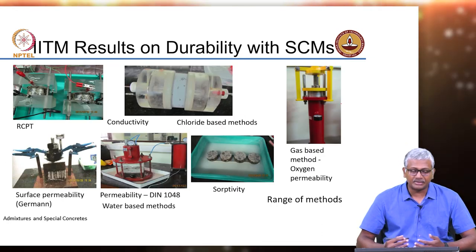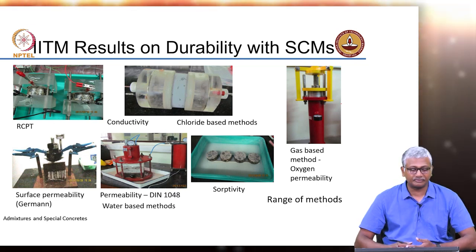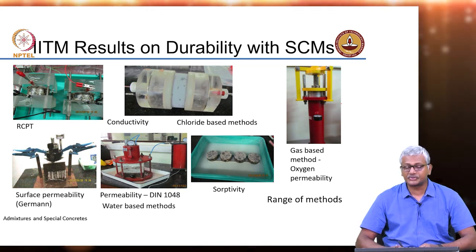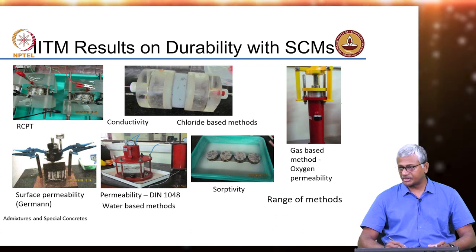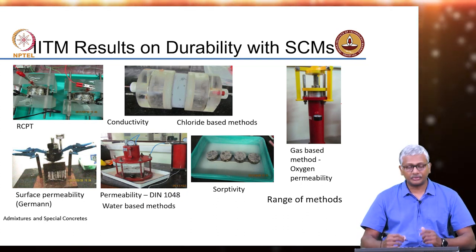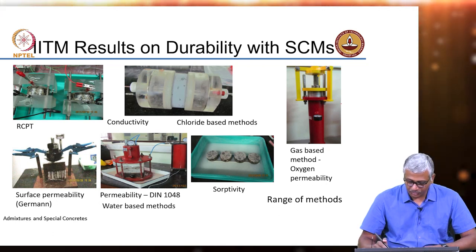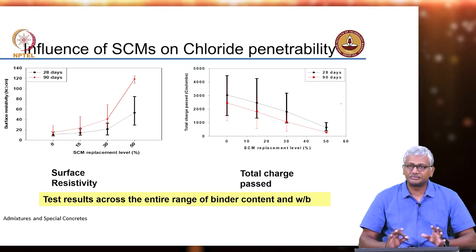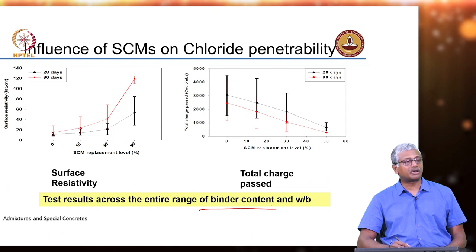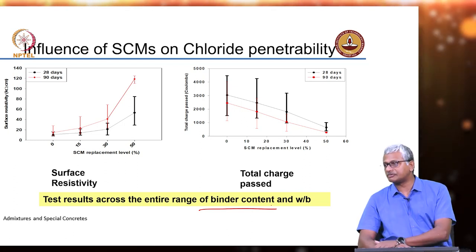We did not only do carbonation, but a whole range of other durability studies — ranging from chloride-based tests to gas penetration tests to water penetration tests — all conducted over a long-term study of about 2 years. The idea was to see what kind of limiting values we need to propose for construction projects when concrete mixtures have mineral additives, and how to control quality of concrete based on durability. Here, test results are presented across the entire range of binder content and water-binder ratio. Over this study, we had nearly 40 to 45 concrete mixes with varying binder contents, water-binder ratios, and replacement levels of supplementary cementing material.